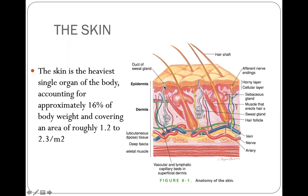This is the cut section of the skin. As you can see, the skin has three major layers. We have the epidermis, wherein the outermost layer is the stratum corneum, which is continuously shedding off so that we can have new skin. We have the dermis, which is the thickest part of the skin. And of course, we have the subcutaneous tissue. Remember that the skin is the heaviest single organ of the body — approximately 16% of body weight, covering an area of 1.2 to 2.3 square meters.